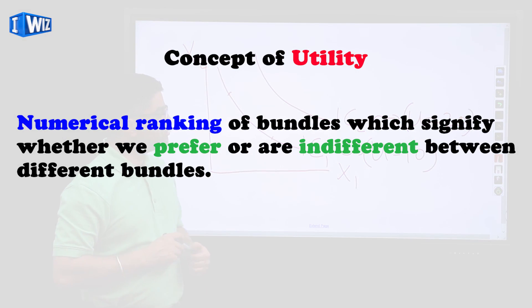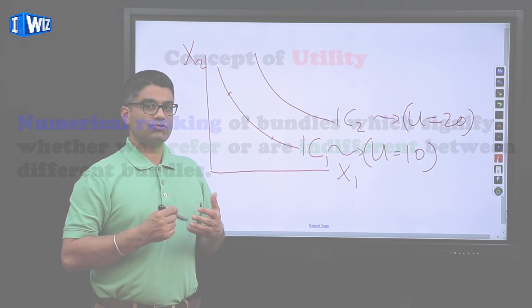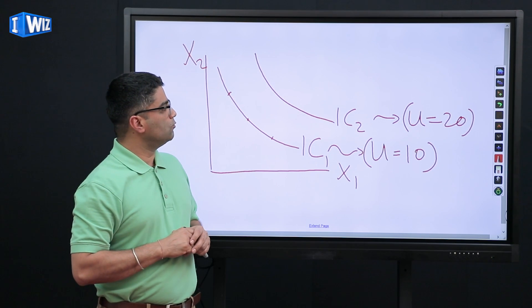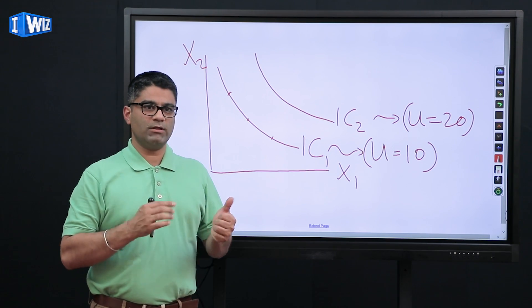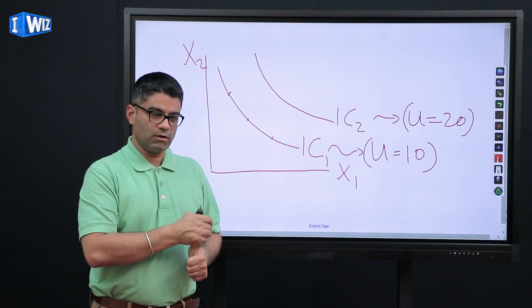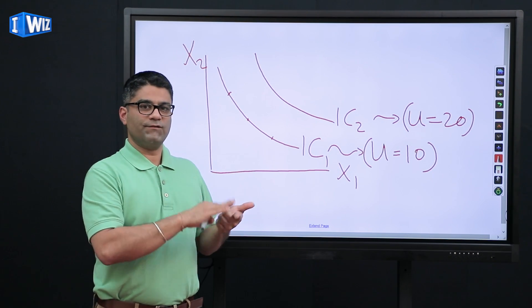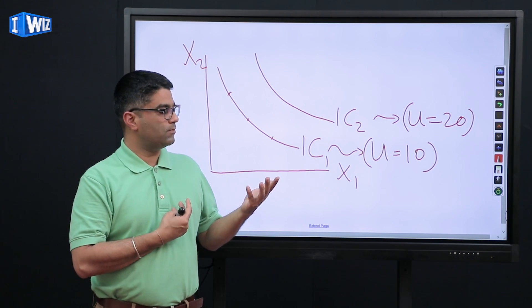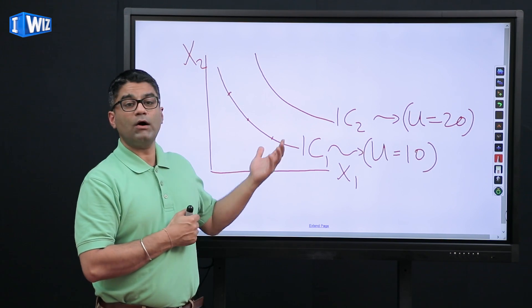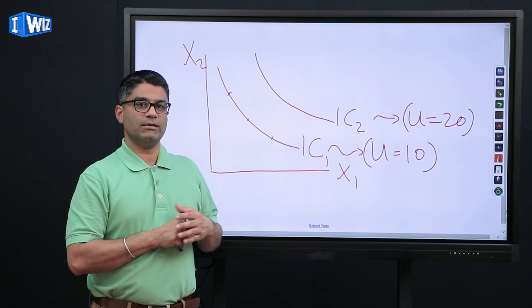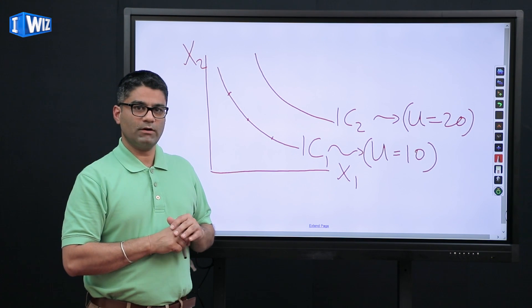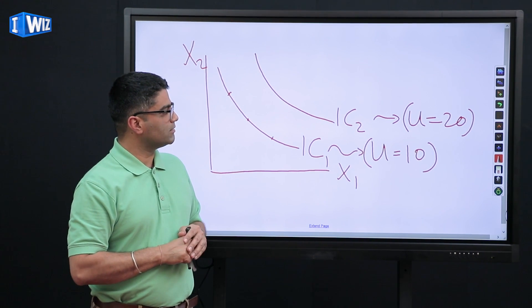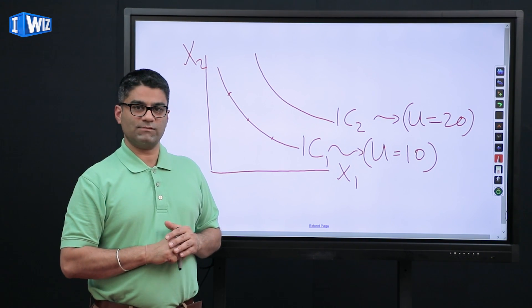So that concludes the topic of utility, which is extremely important. Make sure before you watch the next video, you are very comfortable with indifference curves, indifference maps, what you mean by bundles between which you are indifferent, and now also utilities. We will be concluding this chapter in the next few videos.